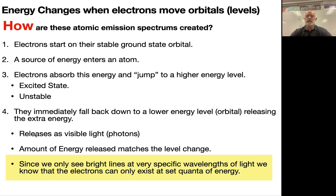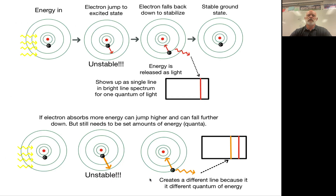When they release, it releases energy into the visible light spectrum. That amount of energy that's released matches the energy level. So because we only see these bright lines at very specific wavelengths — these very distinct lines — we know that the electrons can only exist as that quantum of energy.